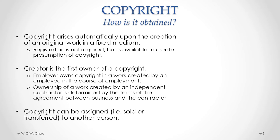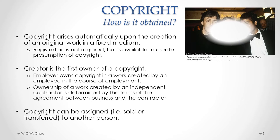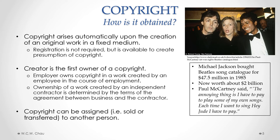A copyright can be assigned from one person to another, or from one person to another company. In other words, copyright ownership can be bought and sold. One example is, back in 1985, Michael Jackson bought the Beatles song catalog for, at that time, a huge sum of $47.5 million. That song catalog is now estimated to be worth about $2 billion.